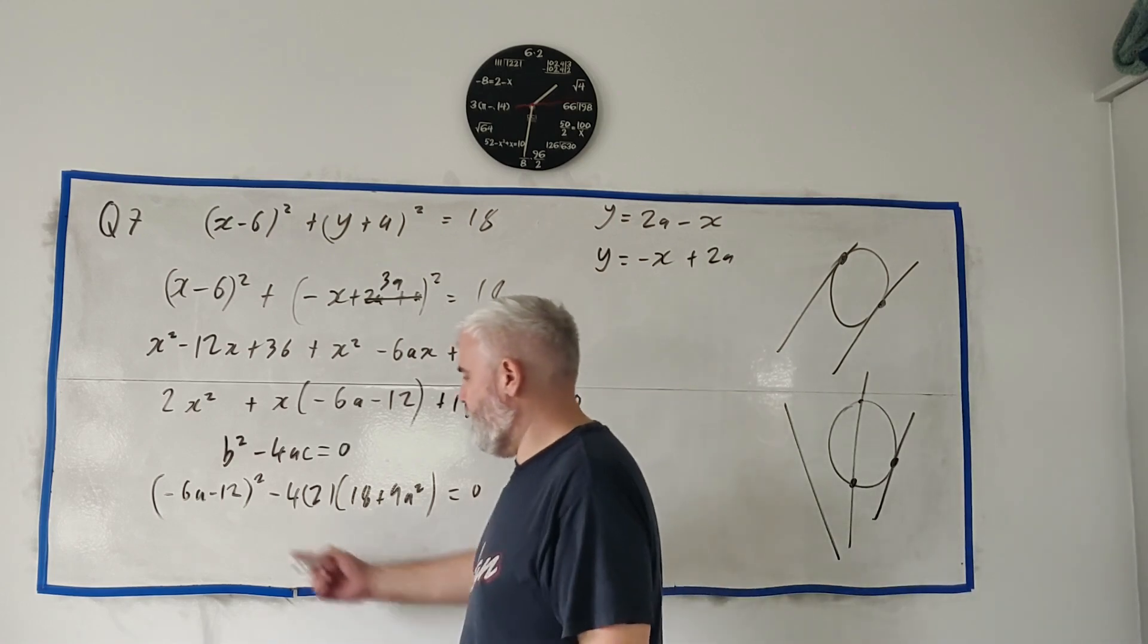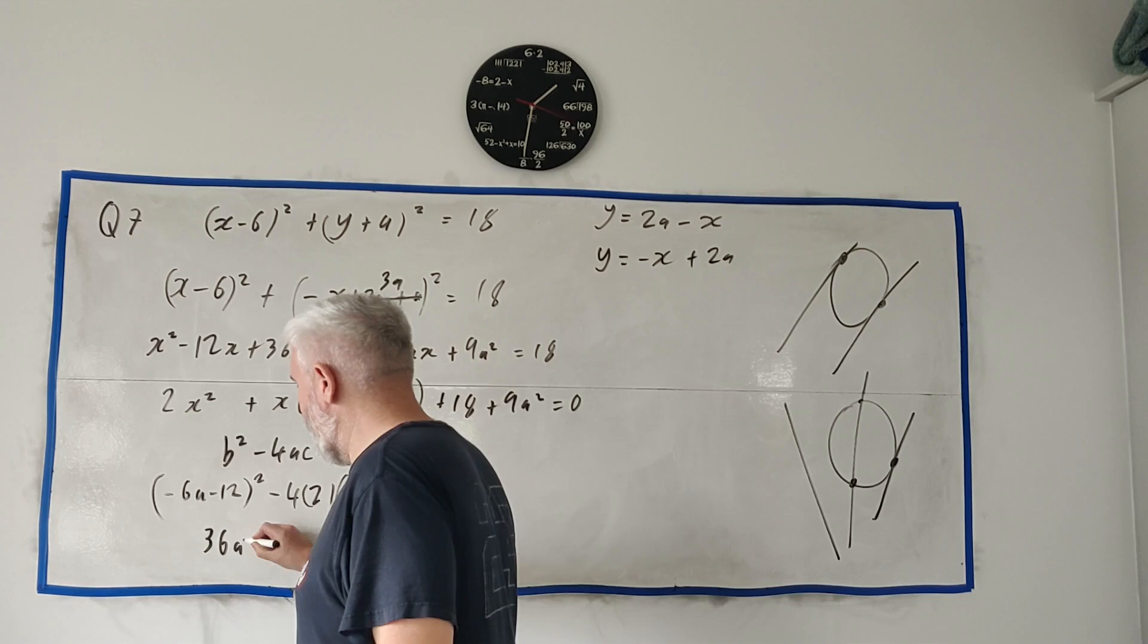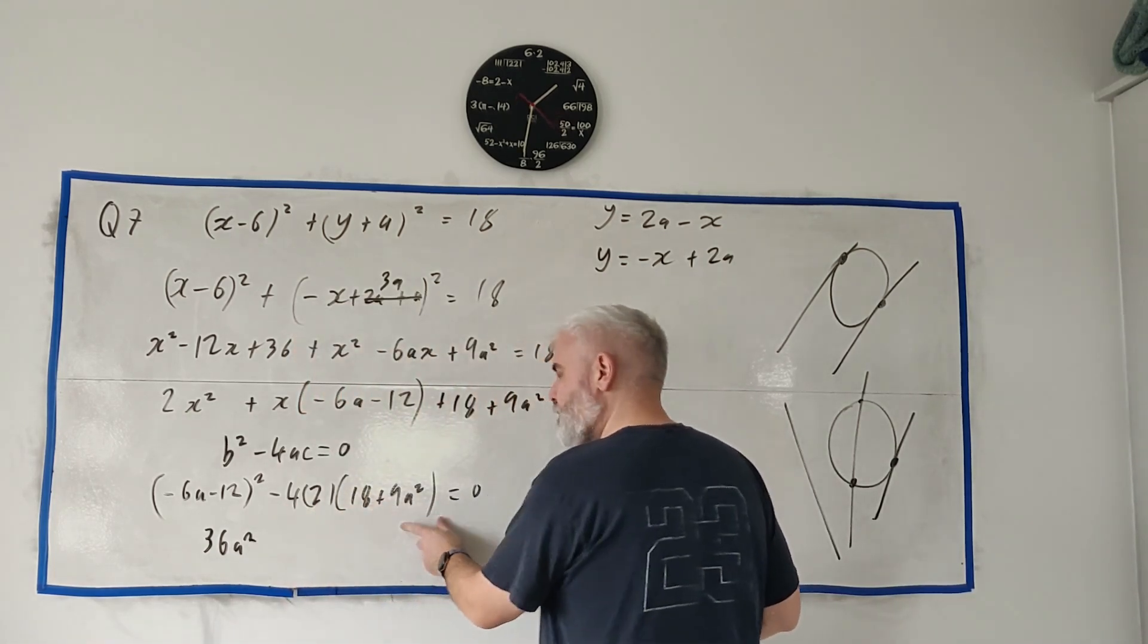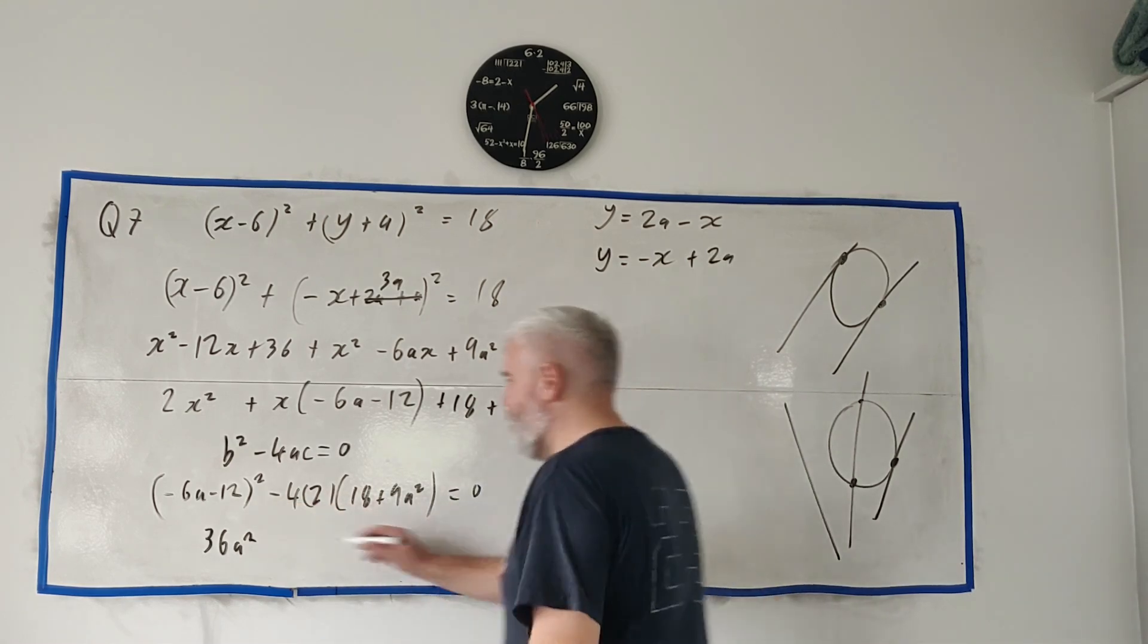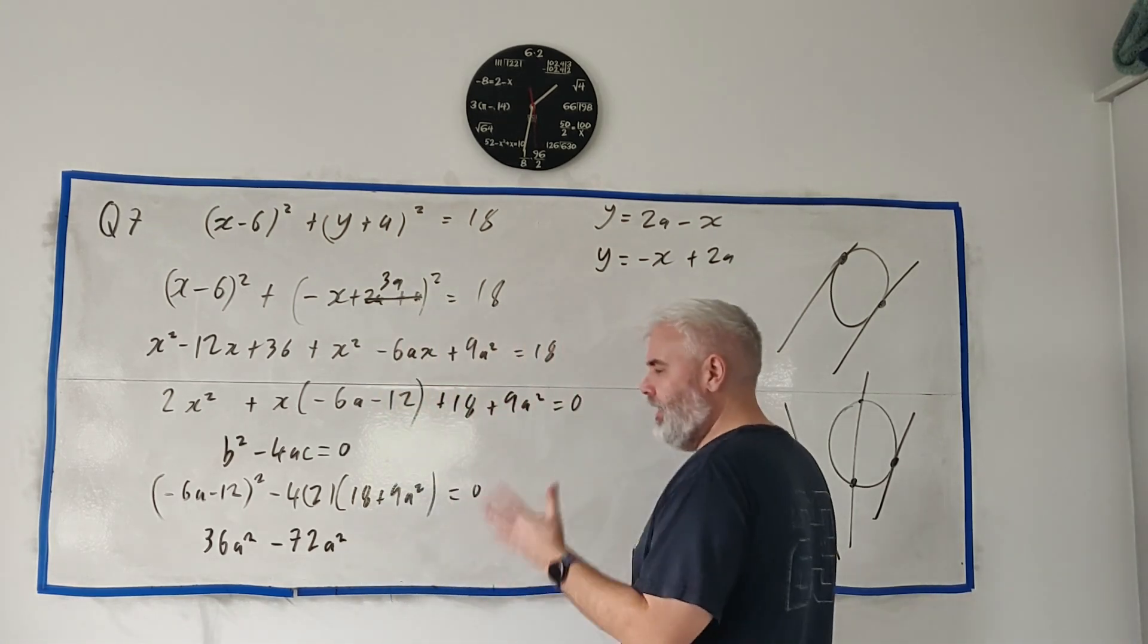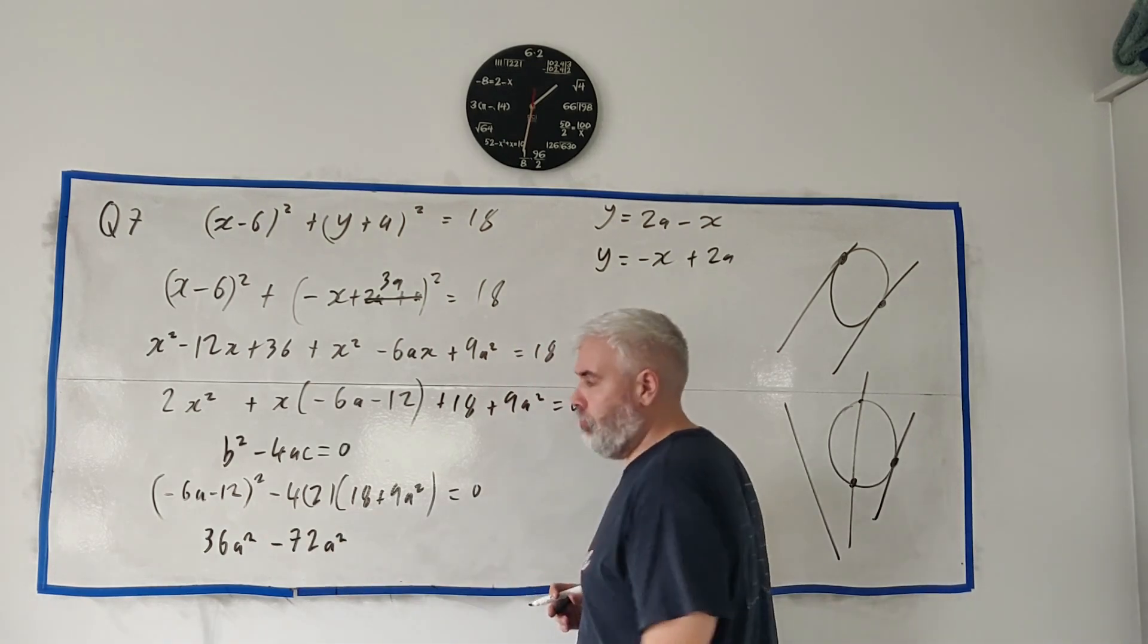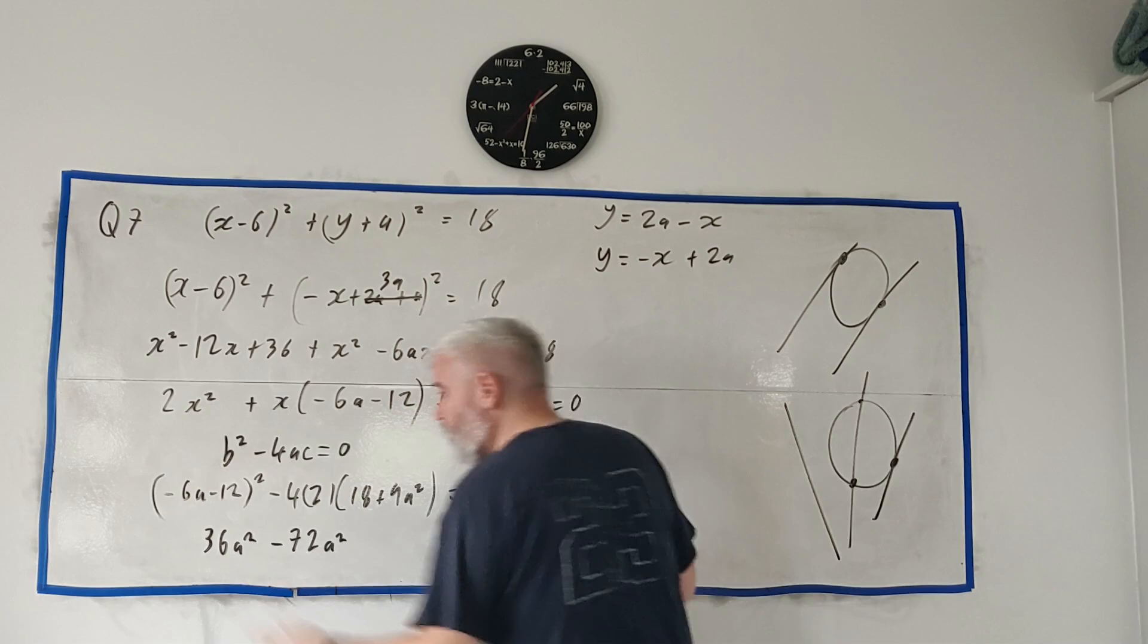The important thing here is we have an equation with only one unknown, there's only A's in here. So when we multiply this out, we'll end up with 6A by 6A, we'll end up with 36 A squares. Let's get all the A squares. We'll have 4 times 2 times 9, that's 8 times 9, A minus, that'll be minus 72 A squares.